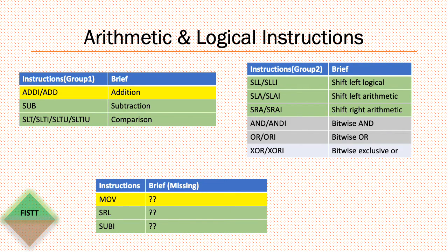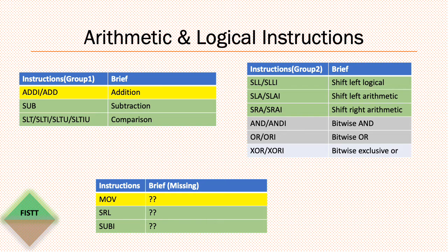I have grouped the arithmetic and logical instructions into two groups. Group one covers add, subtract, and set less than instructions — more like arithmetic instructions. Group two covers shift and bitwise operations — more like logical instructions. There's also a third group which has move, shift right logical, and sub-immediate. These are common in other platforms, but RISC-V doesn't have them. We'll see why RISC-V doesn't have these common instructions.